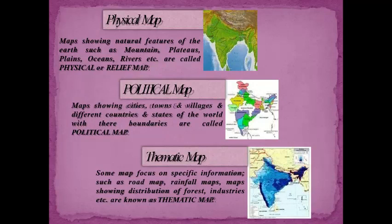Political map: Maps showing cities, towns and villages, and different countries and states of the world with their boundaries are called political maps. Thematic map: Some maps focus on specific information such as road maps, rainfall maps, maps showing distribution of forests, industries, etc. These are known as thematic maps.